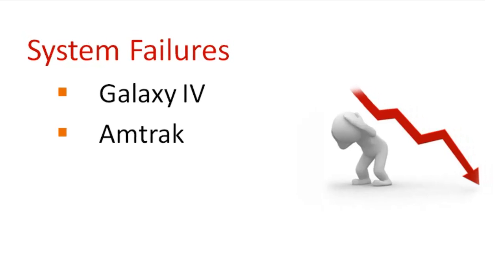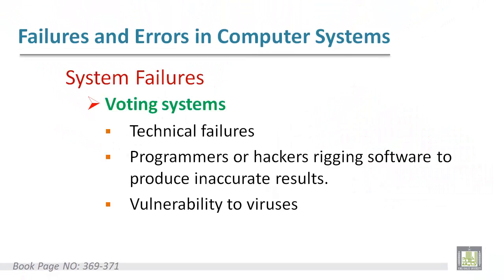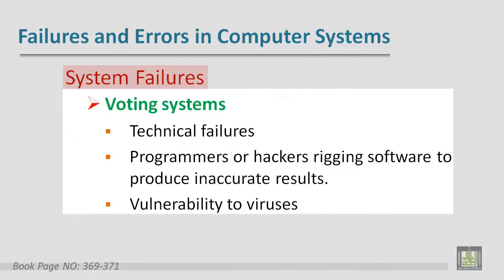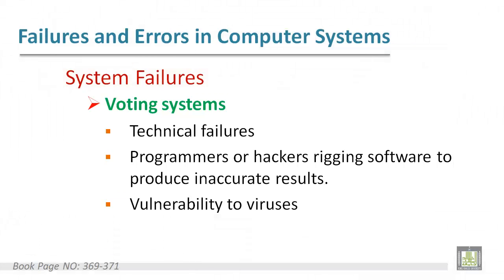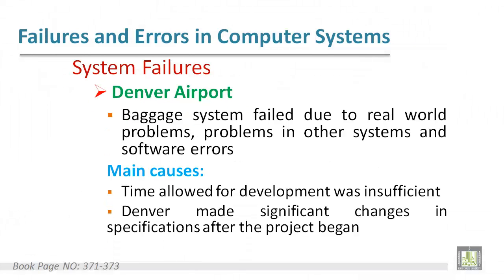There are two examples you can return to the book to read more details about: the Galaxy IV and Amtrak examples of system failures. In voting systems, errors and failures can happen because of technical issues, hacking of the software, or vulnerability to viruses.